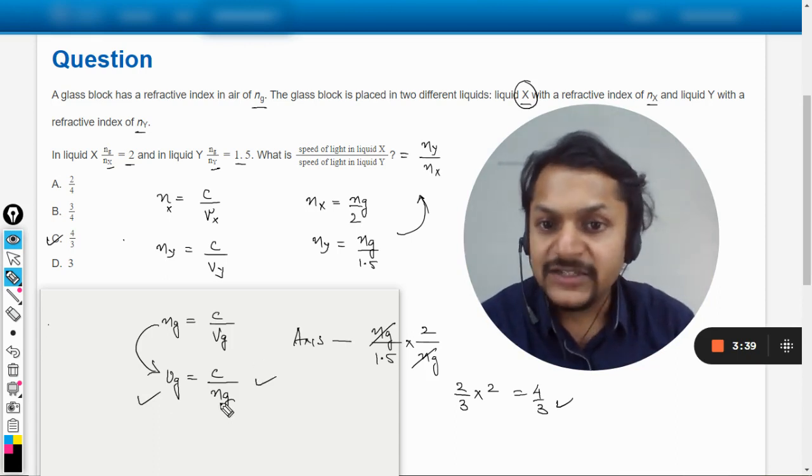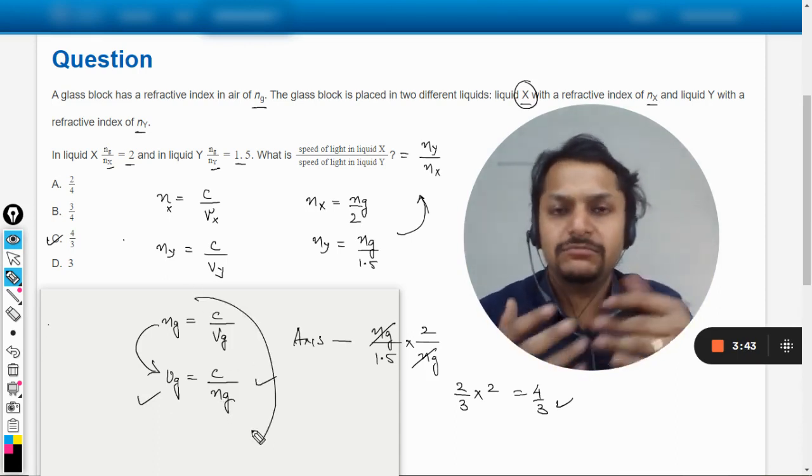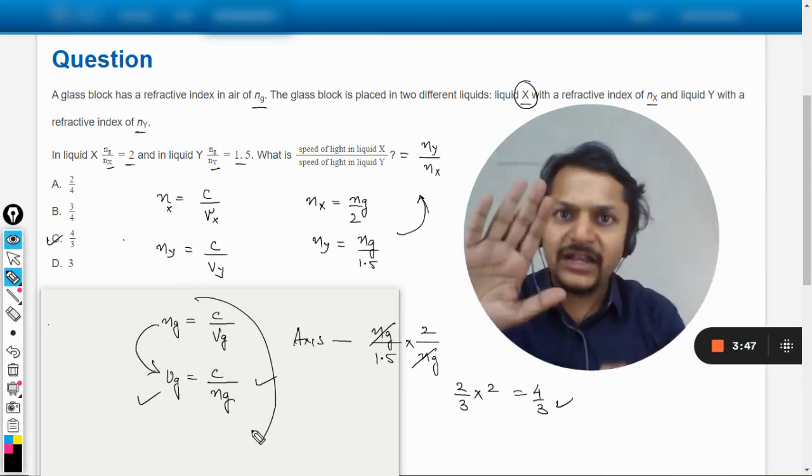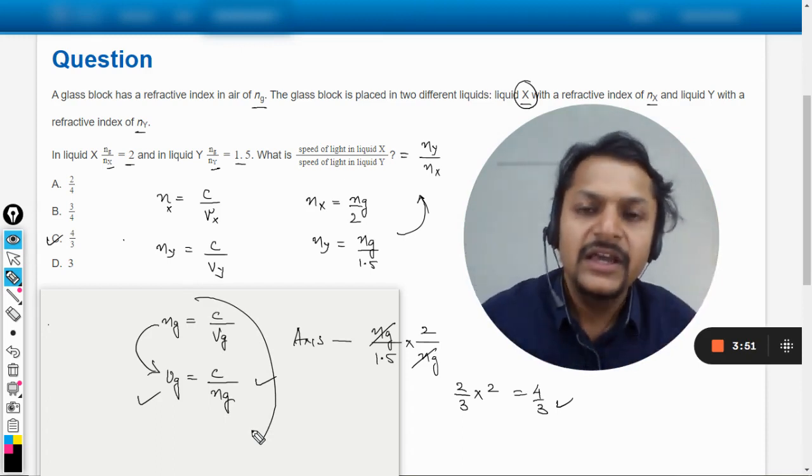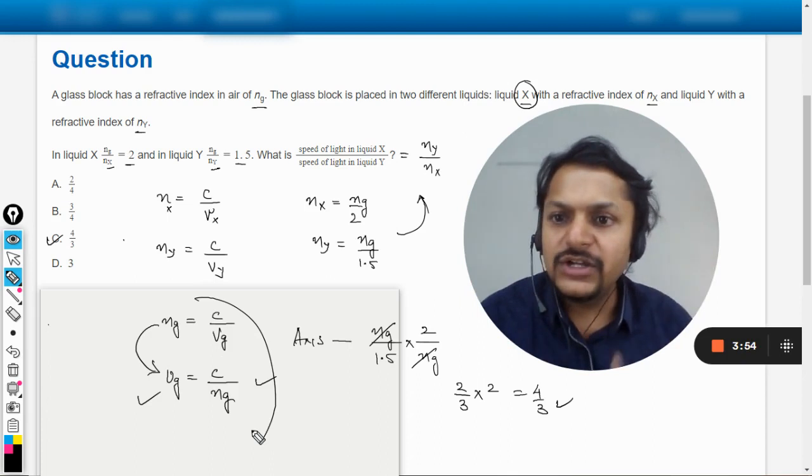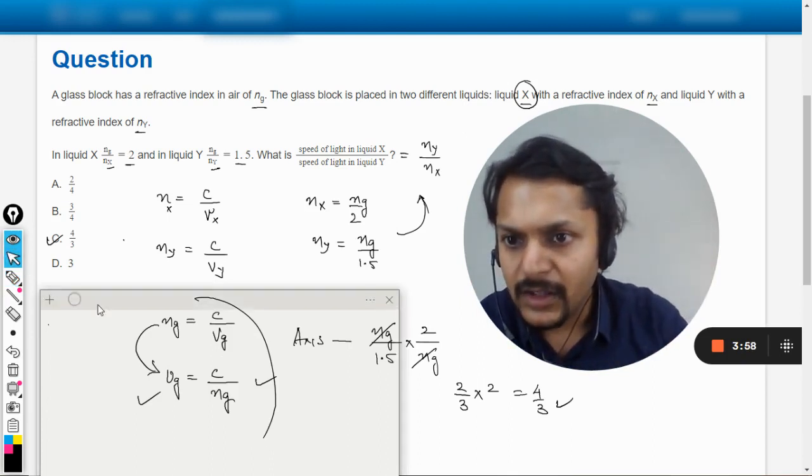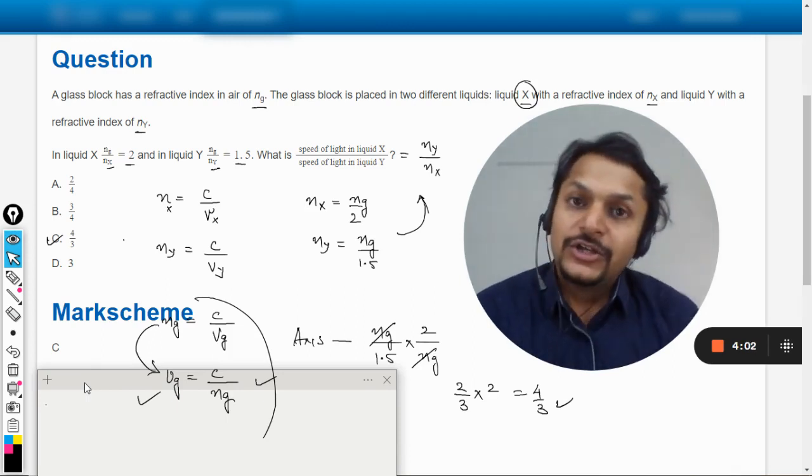If you're talking about glass, we are not at all considering X or Y - the combinations don't matter. All the mediums are technically individual and we are just dealing with them separately. That is the crux behind this question. Let us verify the answer from the mark scheme. Yes, the answer is C.